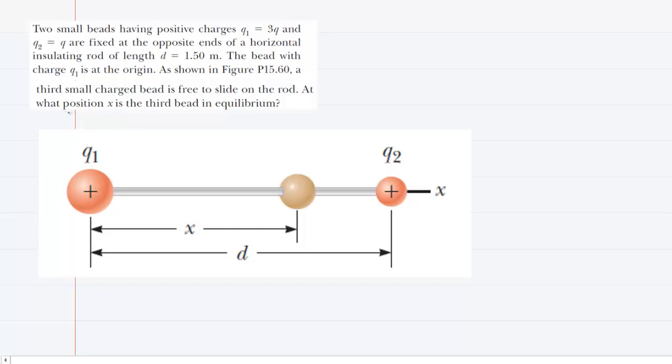We're going to try to determine the position x that this third bead is located in order to be in equilibrium. We'll begin by assigning a capital Q for this charge that lies between Q1 and Q2. Then we'll assume that this has a positive charge. It turns out the analysis would work just as well if we assumed it had a negative charge.